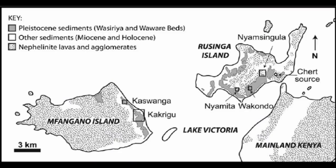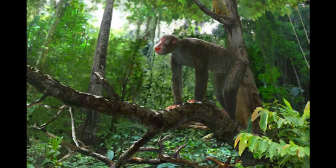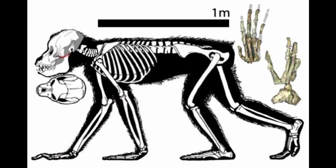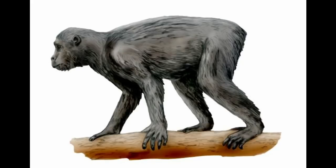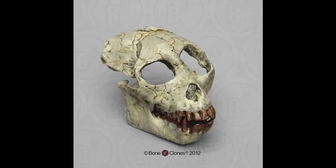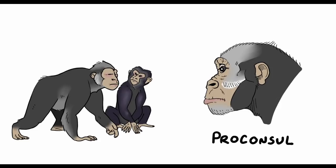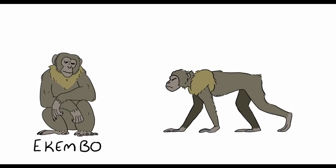Proconsul is known primarily from its remains at Rusinga Island, where it has been well characterized, but this ancient ape has been found in many places in East Africa. It appears as early as 21 million years ago, and its ape traits make it stick out like a sore thumb as a hominoid. Sporting a tailless form, Proconsul and its cousin Akembo have gracile skulls with only moderate mid-facial prognathism and low alveolar prognathism. They have larger brains than their contemporaneous monkey kin, with incisors adapted for fruit consumption. They have canine teeth with a premolar honing complex — constant honing that keeps them sharp — and male canines are around one and a half times the size of female canines, perhaps suggesting a social system with high male competition.